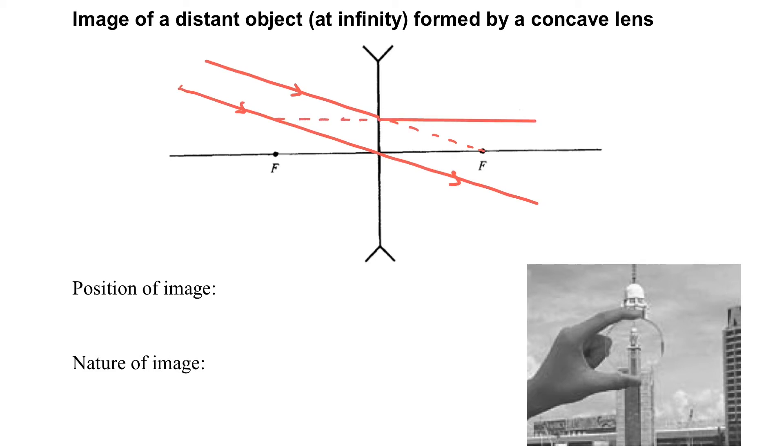And so we will use the ruler to draw the parallel light rays. And you will find that it is diverged from the focus on the left hand side. So the image will be formed just at the position of the focal plane.